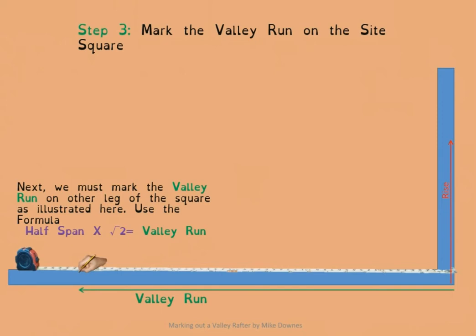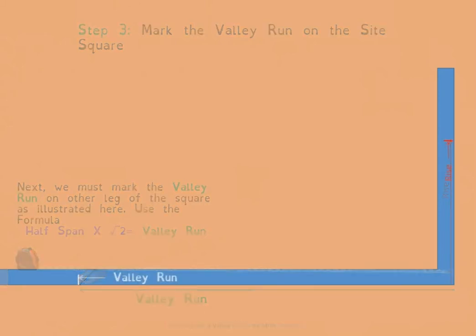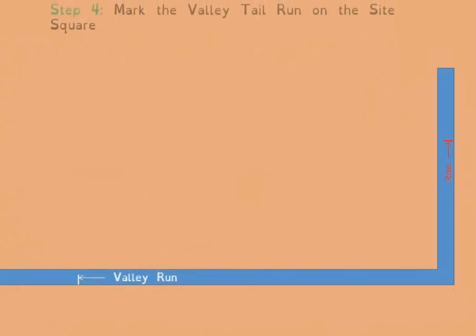Just to mention in passing, the square root of two is a quick way of getting the diagonal of a square. If you have a 3-foot by 3-foot square and multiply 3 feet by the square root of two, you get the diagonal — but it only works on the diagonal of a square, not a rectangle. That's now been marked on the leg of the square as our valley run.